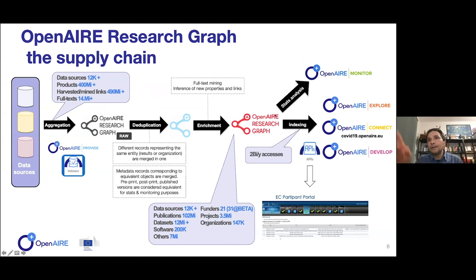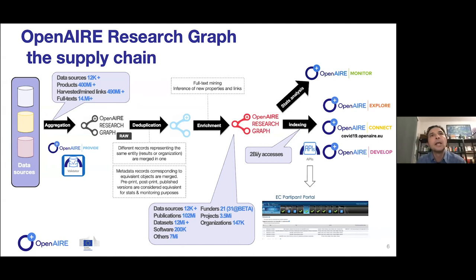Among the consumers is Scopus, Elsevier, Mendeley. They use our APIs because we have the largest collections of links between articles and publications. So whenever you click on Scopus, you get the list of datasets linked to your articles, thanks to the graph that we're offering.